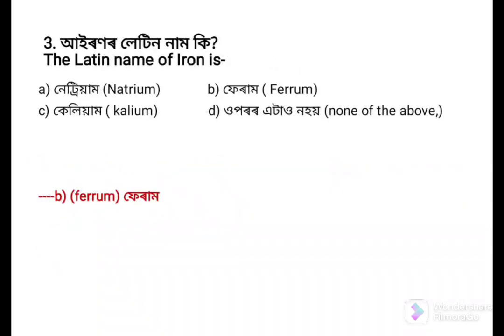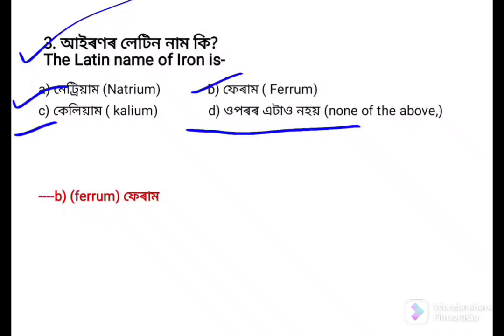Next question: The Latin name of iron is — Option a: Natrium, Option b: Ferrum, Option c: Kalium, Option d: None of the above. The answer is Option b: Ferrum.